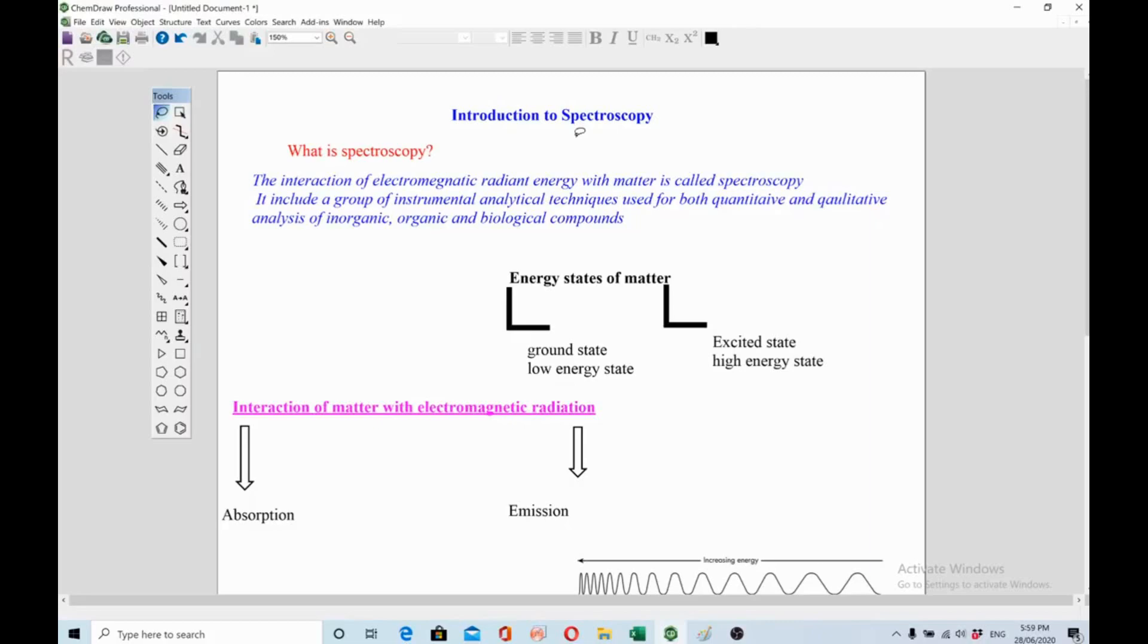Let's start with the definition. The interaction of electromagnetic radiation energy with matter is called spectroscopy. Now there are some keywords here: one is interaction, like how the electromagnetic radiations are going to interact with the matter. That is our one keyword. And second keyword is electromagnetic radiant energy, what is it, from where does it come from, and the third one is matter.